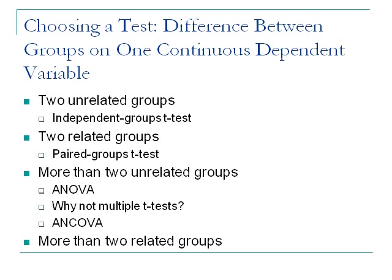You can use repeated measures ANOVA with any within-subject design that has three or more levels. For example, in a drug study where each subject takes zero milligrams, 20 milligrams, and 30 milligrams — measuring the DV at each level — you would use repeated measures ANOVA to look for differences across levels of the drug.